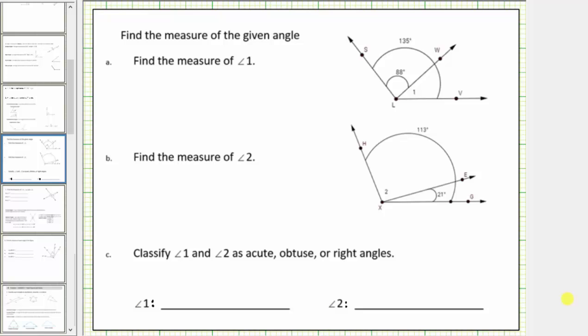In this lesson, we will determine the measure of a missing angle from a diagram and then classify the angle as acute, obtuse, or right.